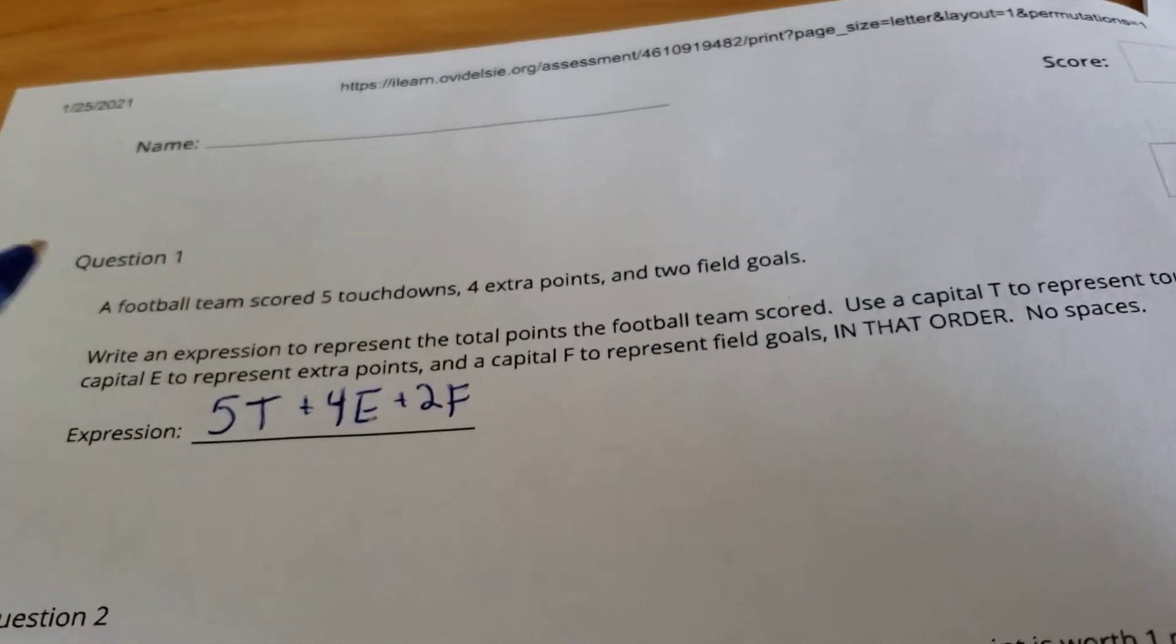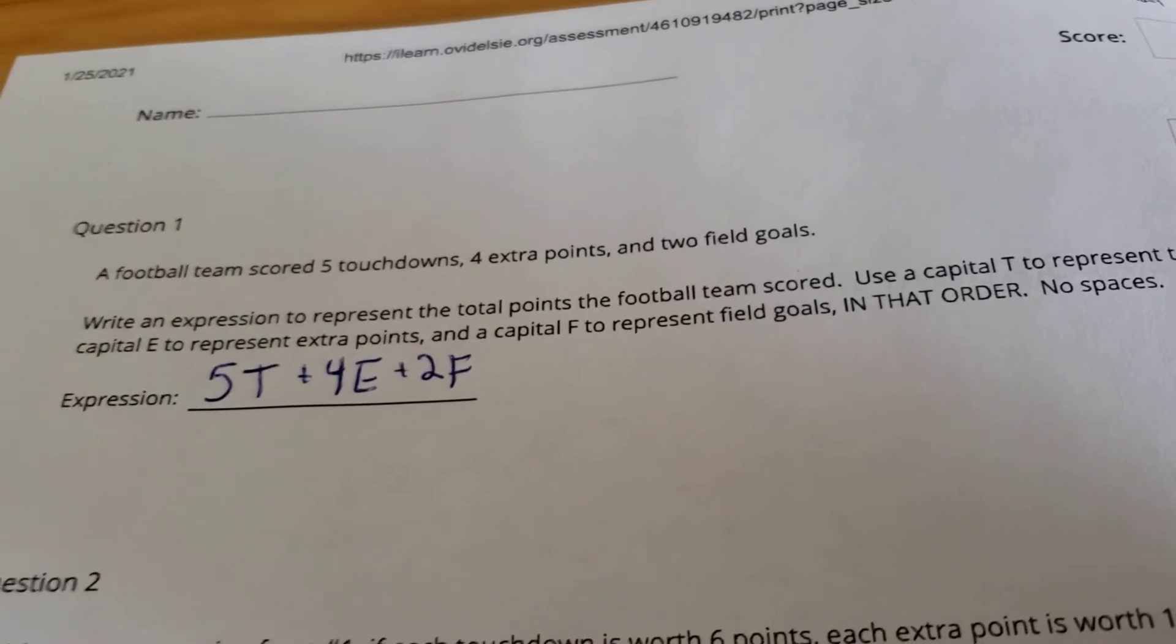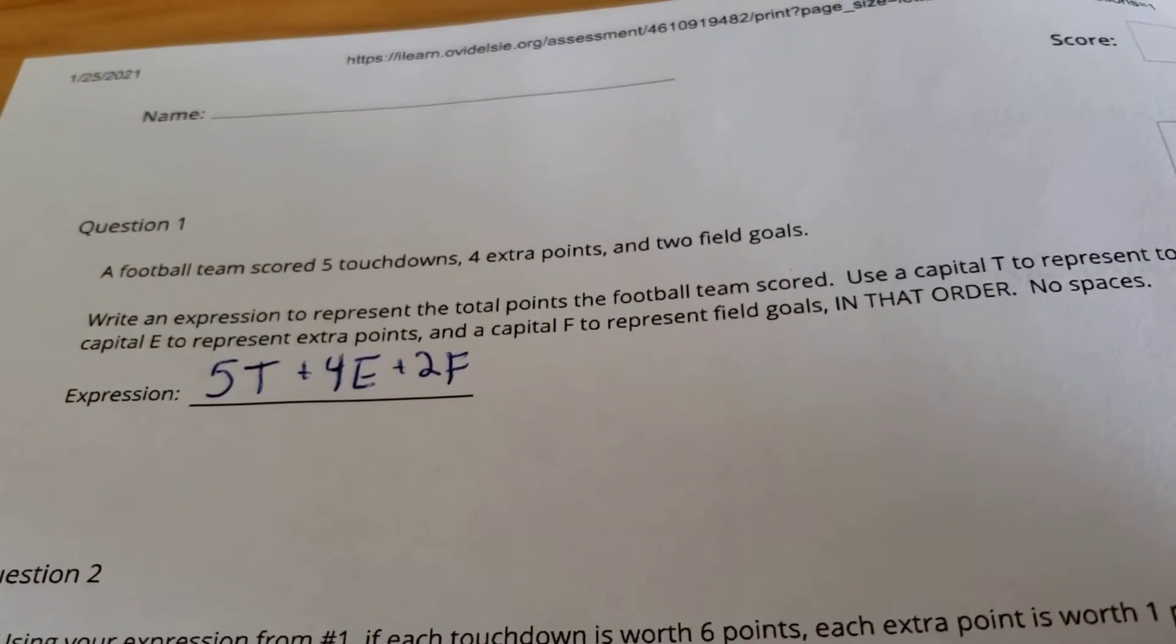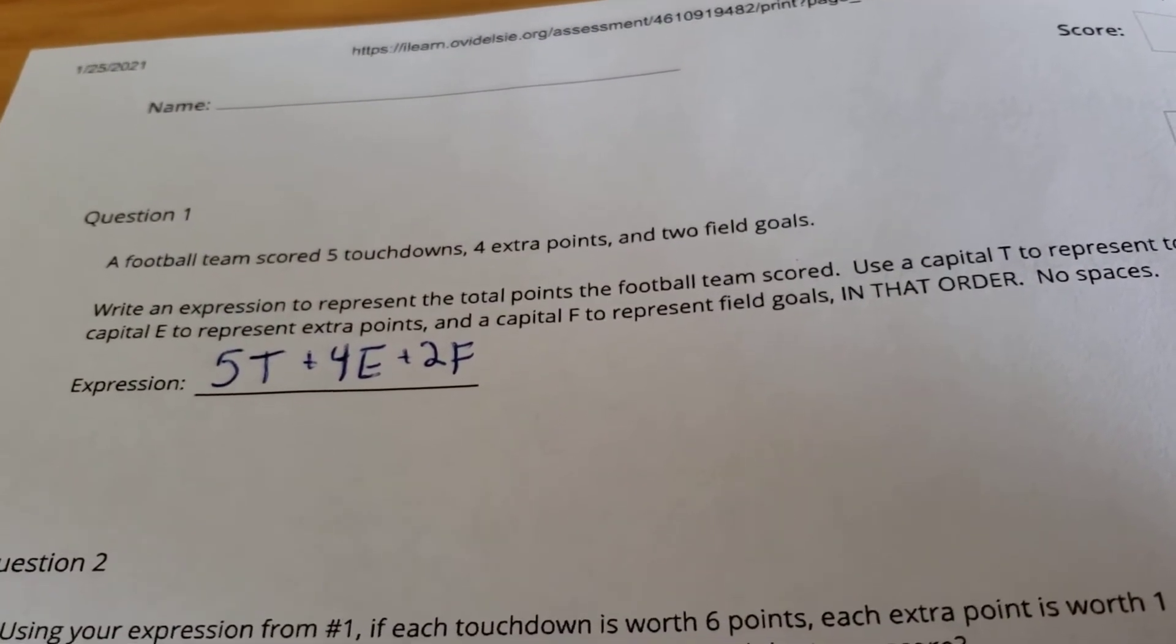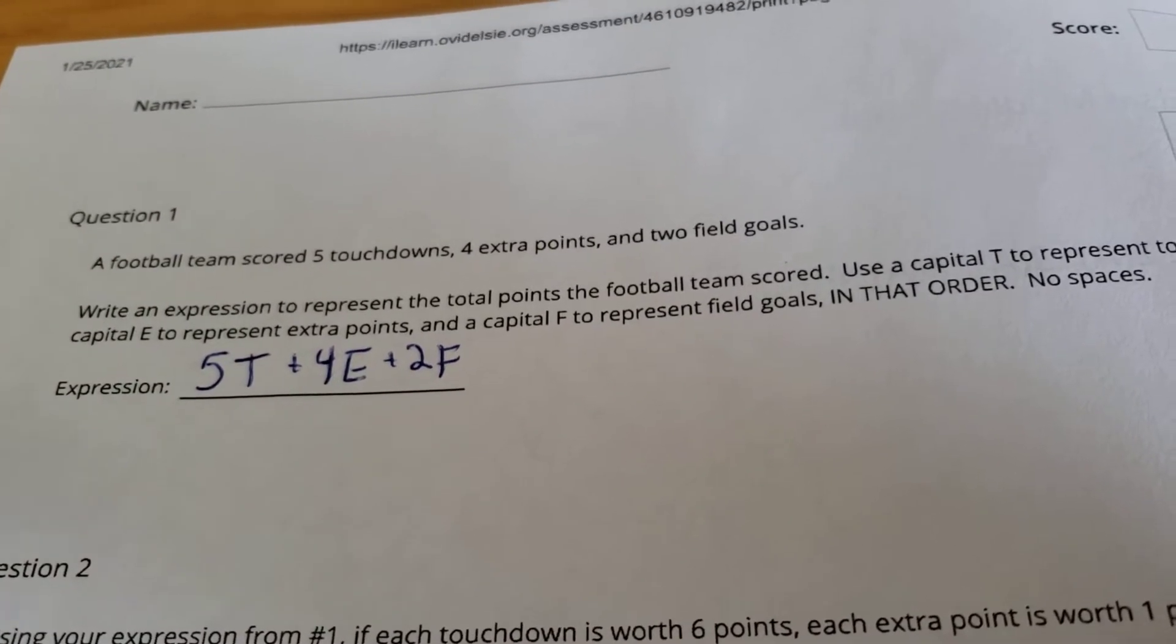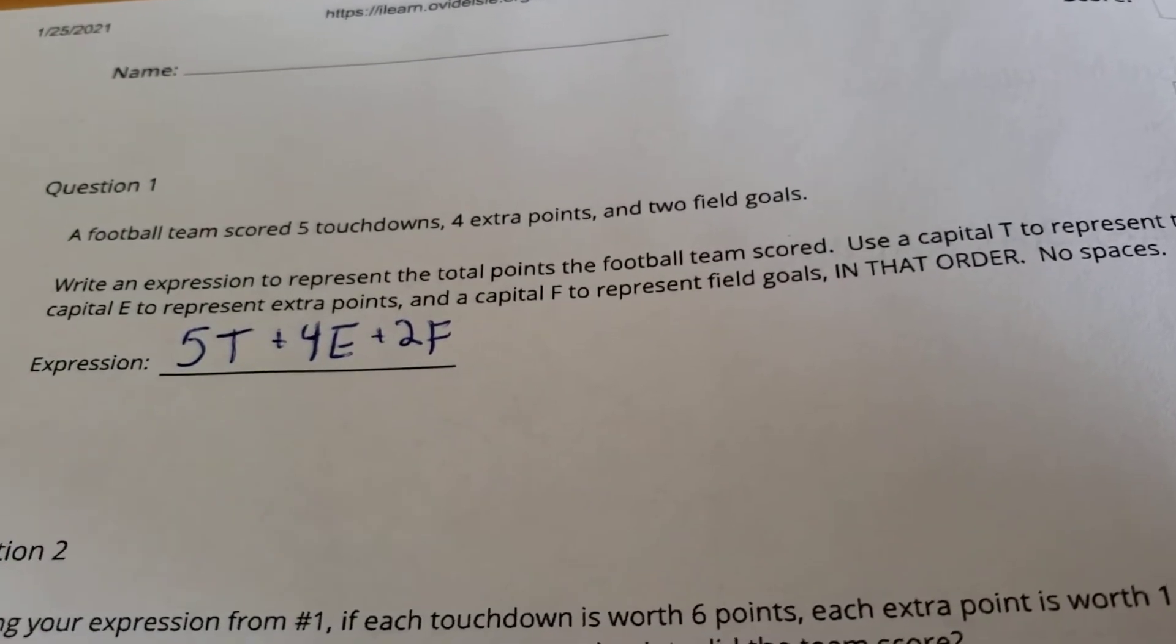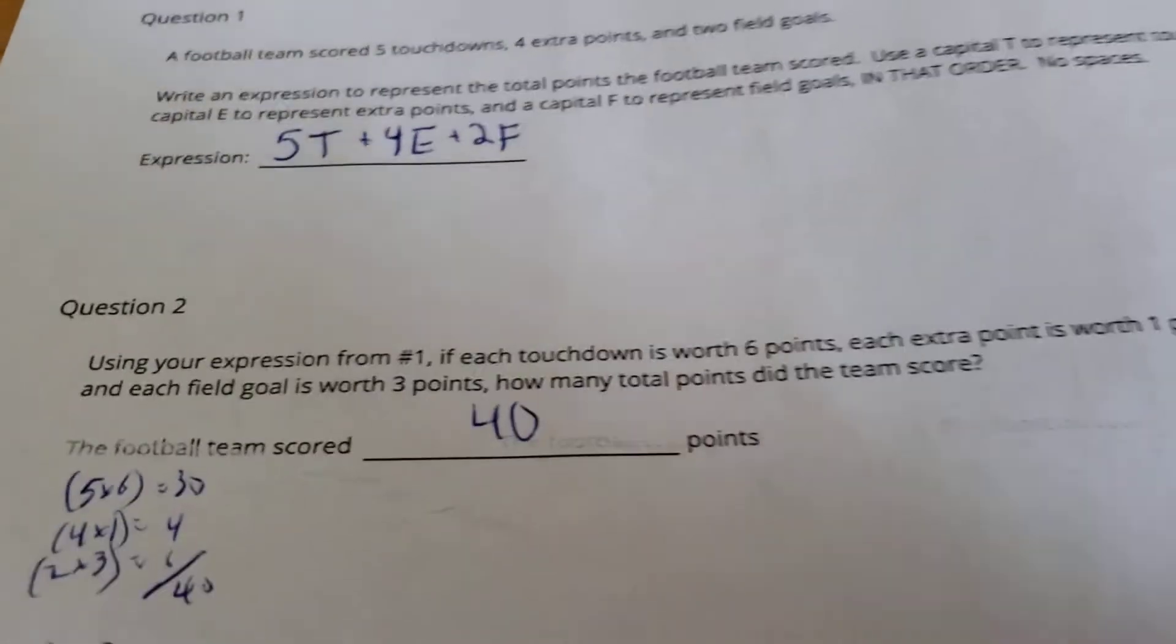In question one, it says a football team scored five touchdowns, four extra points, and two field goals. We want to set up our own expression from this. We're using T for touchdowns, E for extra points, and F for field goals. So it would be 5T plus 4E plus 2F. No spaces between those. We can type that into Schoology.